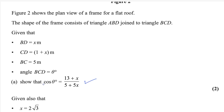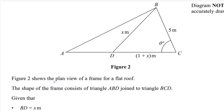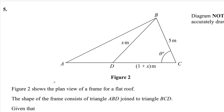For the first part we need to find the value of cosine theta. In triangle BCD, the angle is theta. If we use the small triangle BCD, we can apply the law of cosines. You should memorize the formula for the law of cosines. This one is the formula.